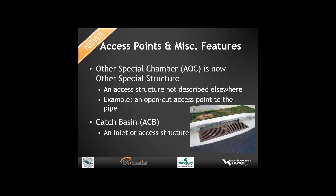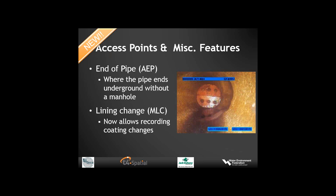TAP modifiers were reordered in priority, especially when more than one modifier can be used: TAP defective or intruding, TAP active or abandoned, in order of priority. A TAP is defective when any defect can be seen inside the lateral. This would alert the client or municipality that a TAP is defective even if they don't have a lateral assessment program. With respect to access points, other special structure is used for an access structure not described elsewhere—for example, an open cut access point to the pipe. Catch basin was redefined as an inlet or access structure. Other access points include miscellaneous features and the end of a pipe underground without a manhole. A lining change code now allows recording of coating changes when a pipe has been coated with cementitious material and then rehabilitated with a CIPP, for example.